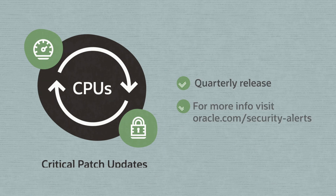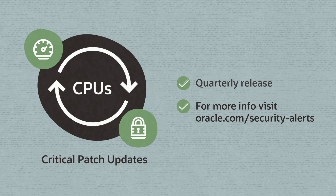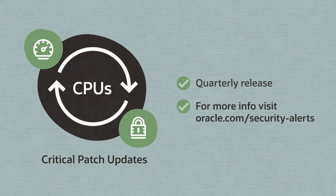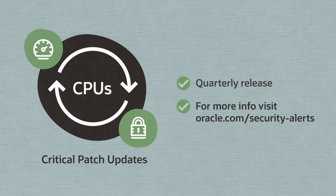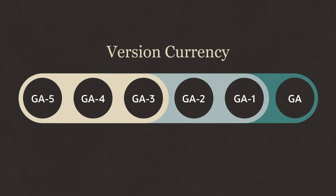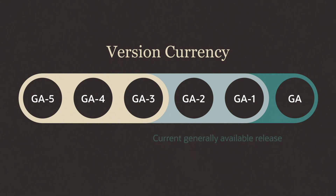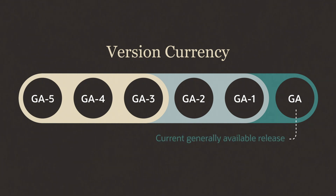Our critical path updates, or CPUs, address security vulnerabilities and are included with version currency. That's why our Oracle hosting and delivery policies require customers to maintain generally available, a.k.a. GA, version currency.